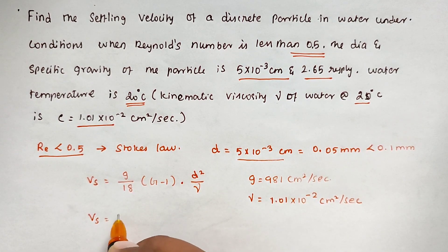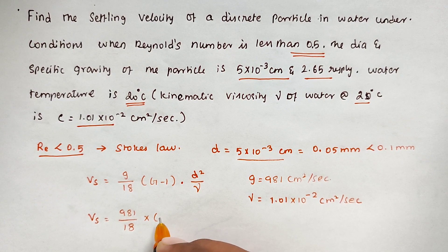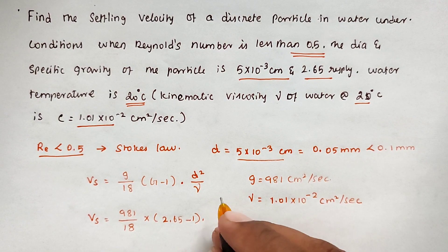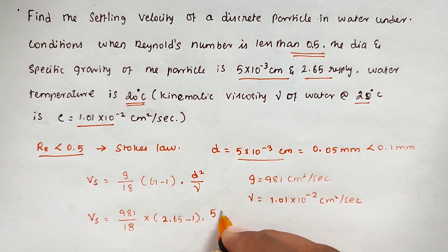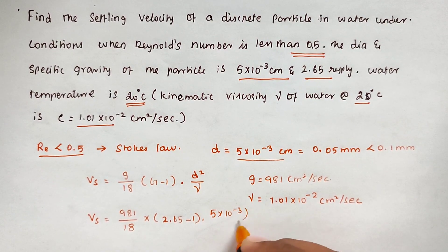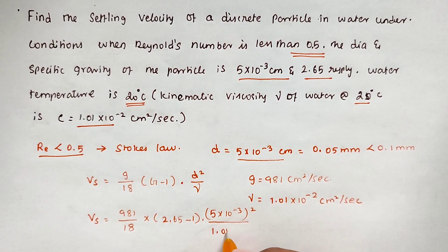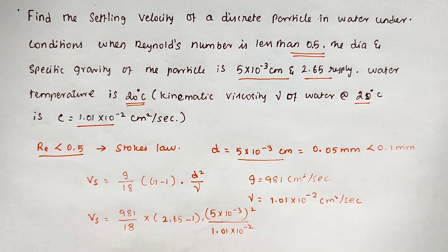The specific gravity G = 2.65, so V = (981/18) × (2.65-1) × (5×10^-3)² / (1.01×10^-2). Solving this, we get V = 0.22 cm/sec.